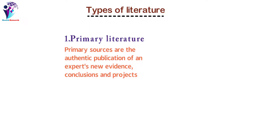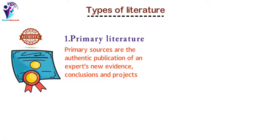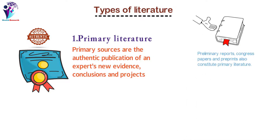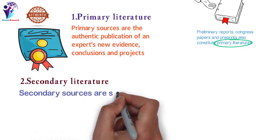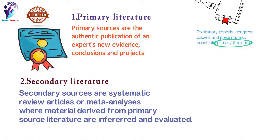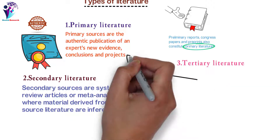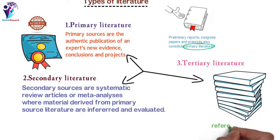Now let's look at the types of literature. Primary sources are the authentic publication of an expert's new evidence, conclusions, and projects, usually published in a peer-reviewed journal. Preliminary reports, congress papers, and preprints also constitute primary literature. Secondary sources are systematic review articles or meta-analyses where material from primary sources is inferred and evaluated. Tertiary literature consists of collections that compile information from primary or secondary literature.